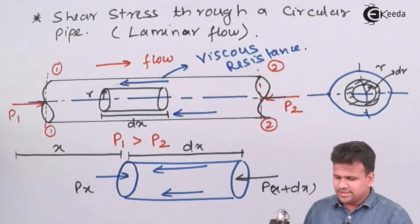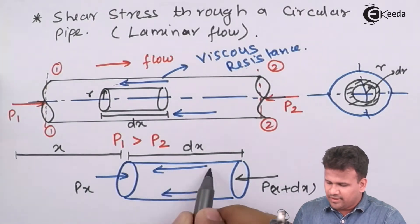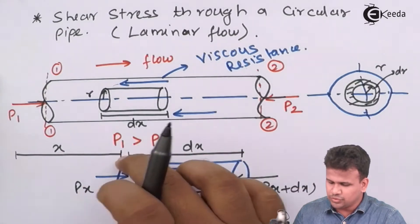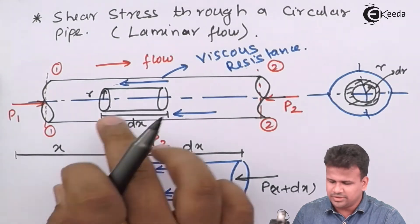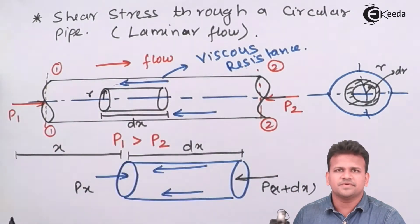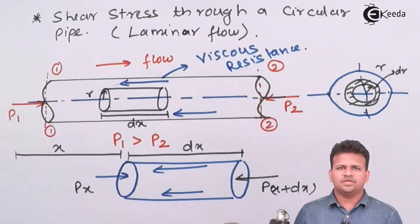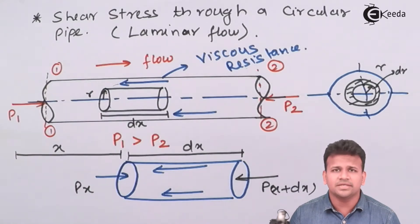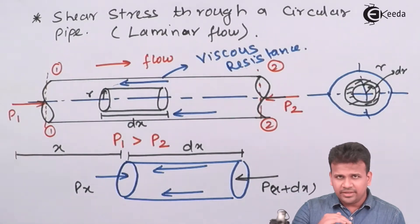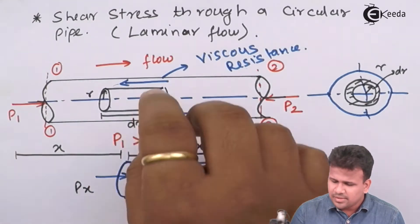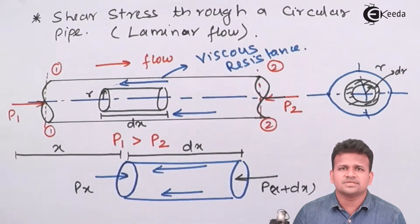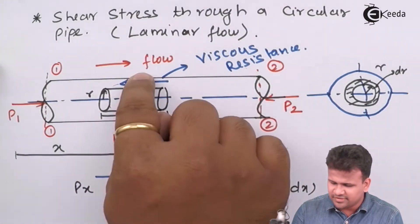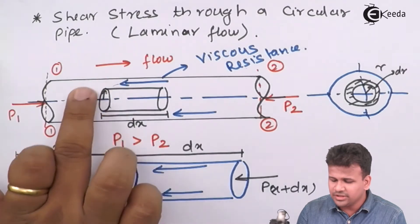Since we are studying laminar flow, in laminar flow there will be viscosity which will predominate — that is, viscous force will predominate the inertial force. During this, there will be some amount of resistance offered along the curved surface area of the fluid. This resistance is called viscous resistance, and it acts in the opposite direction. The viscous resistance is due to the shear stress applied by the fluid on the curved surface area. The viscous resistance acts on the curved surface area while the inertial force acts upon the cross-sectional area.